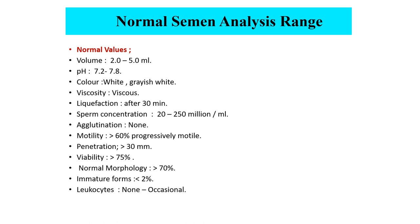Composition of semen: semen consists of fluid and sperms ejaculated from vas deferens (10%), seminal vesicle fluid (60%), and prostate gland fluid (30%). Volume is 2–5 ml; pH 7.2–7.8; appearance white or grayish white, viscous; liquefaction occurs after 30 minutes. Sperm concentration varies between 20–250 million per ml. No agglutination present. Motility: more than 60% progressively motile. Penetration: more than 30 mm. Viability: more than 75% viable. Normal morphology: more than 70%; immature forms less than 2%; leukocytes present occasionally.